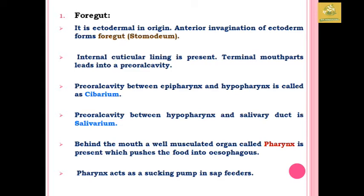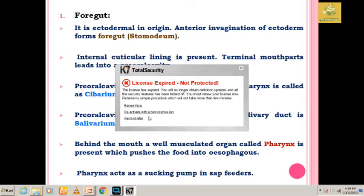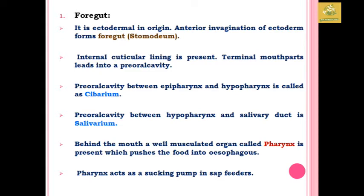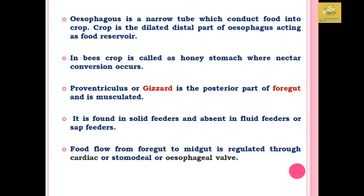Behind the mouth there is a musculated organ known as the pharynx, which gives movement to food and pushes the food from the mouth through the esophagus of the alimentary canal. The pharynx acts as a sucking pump in sap feeders. After the pharynx, the esophagus is a narrow tube that connects and moves food into the crop.